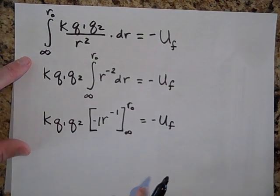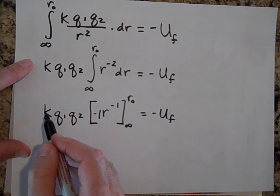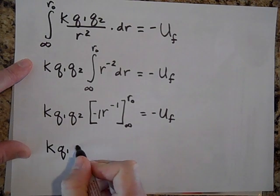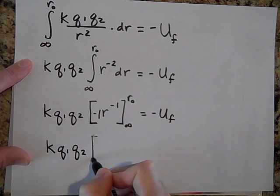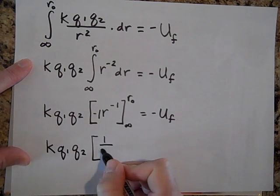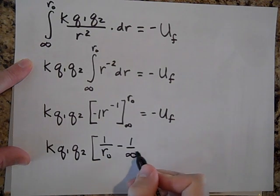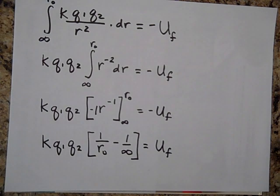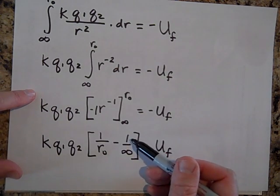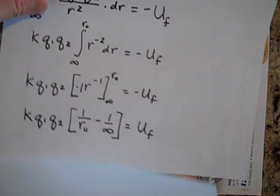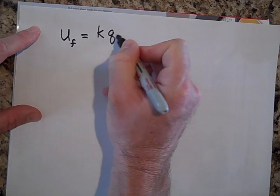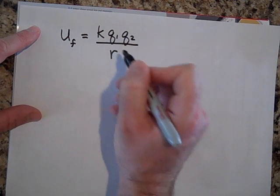Pulling out the negative, we have two negatives that cancel, giving K Q1 Q2 times (1/R0 minus 1/infinity), which equals U final. Since any finite number divided by infinity goes to zero, 1/infinity is 0. So the potential energy of that system is simply K Q1 Q2 over R0.